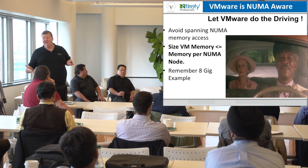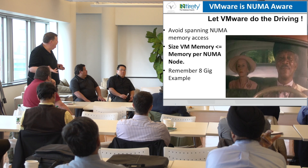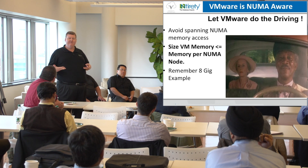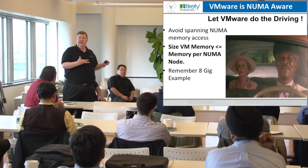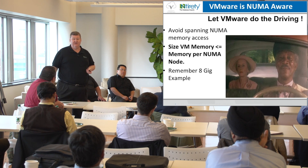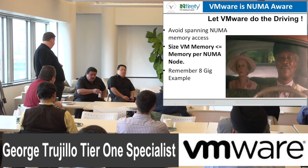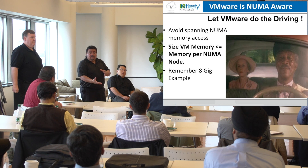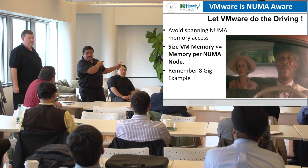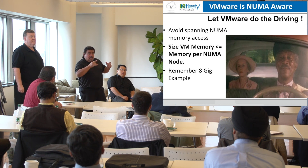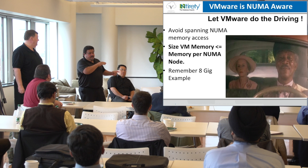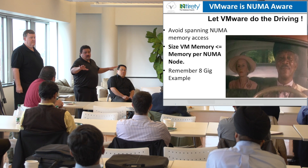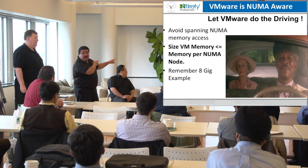VMware is NUMA-aware, so it will take full advantage. The analogy is: let VMware do the driving. The hardware vendors are making things virtualization-savvy, and VMware is smart enough to fully utilize this. Sometimes best practices say don't use NUMA, but they're talking about what an operating system can handle. In virtualization, it's the VM kernel doing this work, with completely different optimized algorithms. It's important to understand why Oracle says not to do this while VMware says to do it — we're looking at it from two completely different contexts: what the hypervisor and VM kernel can do.